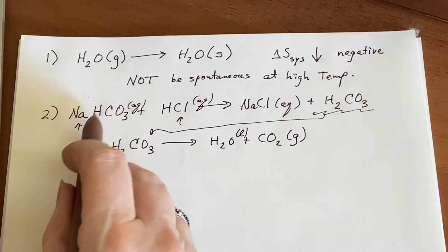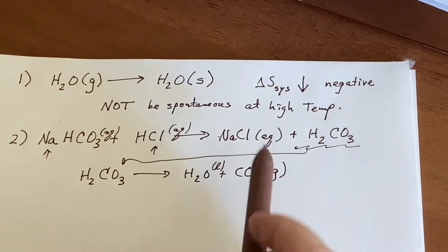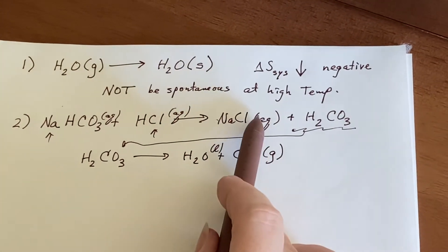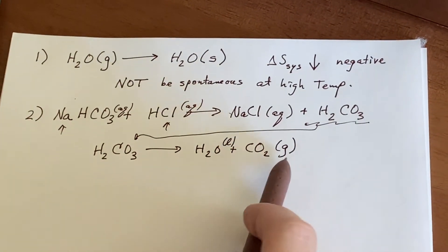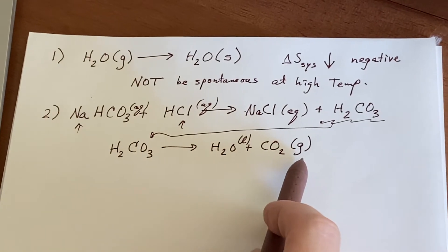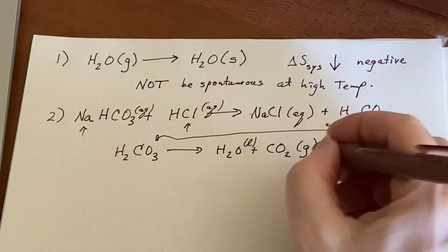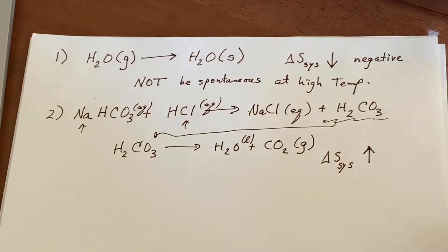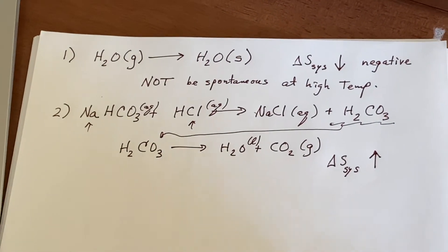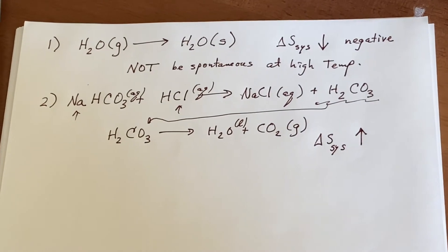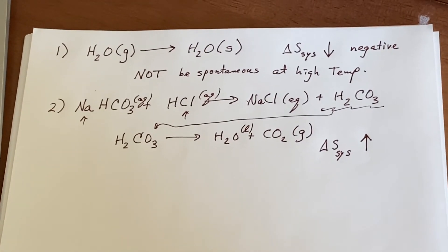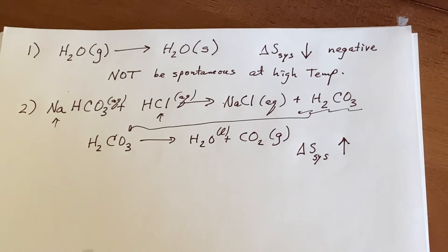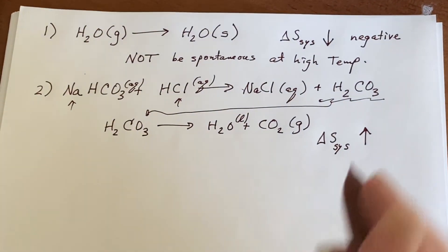So ultimately, I'm saying two aqueous things combined and gave me an aqueous, a liquid, and a gas. Oh, gas has a lot more freedom of motion. So delta S here of the system must have gone up for the reaction. Your products have more entropy than your reactants did. So it's always products minus reactants. So I must have a positive.